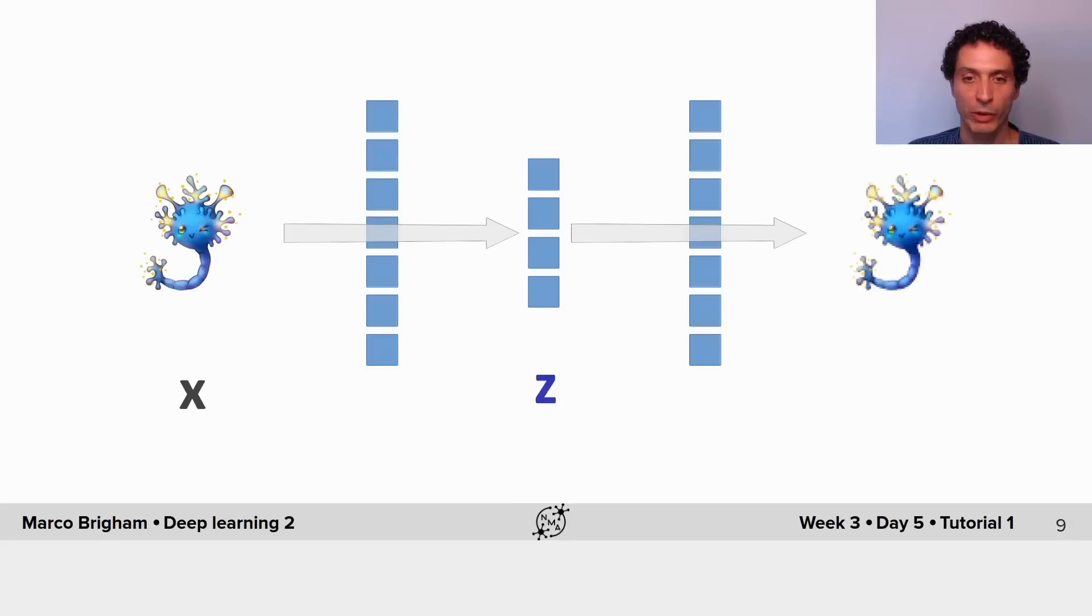Now the autoencoder can still be divided into components: the encoder component that goes from the input into the bottleneck layer, and the decoder component that goes from bottleneck layer into the output. And actually the autoencoder is a sequence of encoding of inputs into bottleneck layer and then decoding the bottleneck layer into the output.